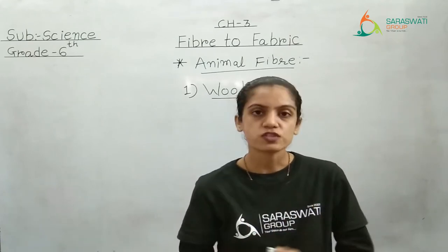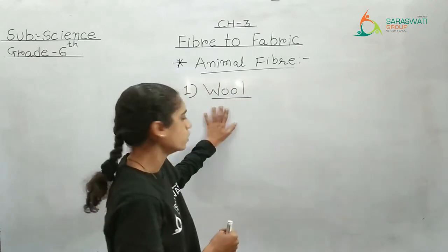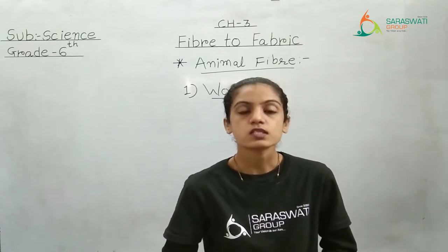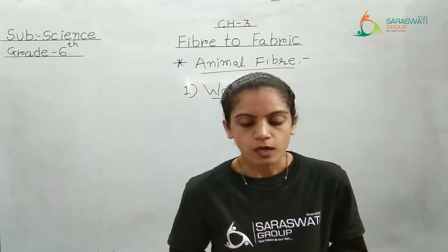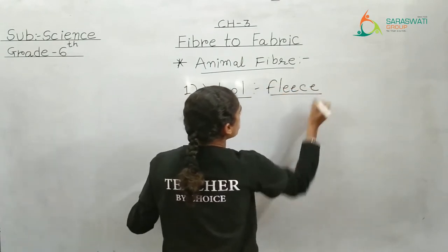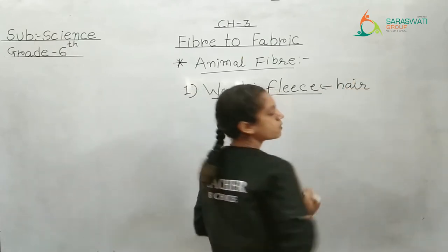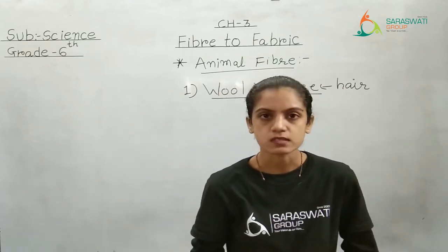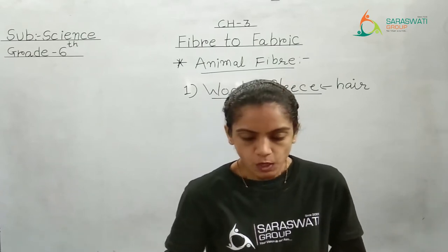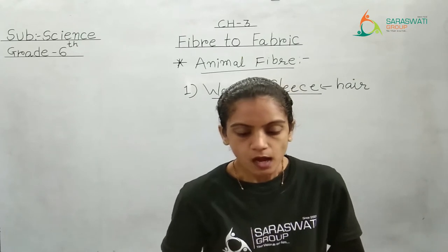So that whole process and a few properties of wool we will cover here. Wool is mainly obtained from the fleece of the animal. Fleece means nothing but the hairs present on the animal's body. Wool is mainly obtained from the fleece of sheep or other hairy animals such as yak, camel, Kashmiri goat and angora rabbit.